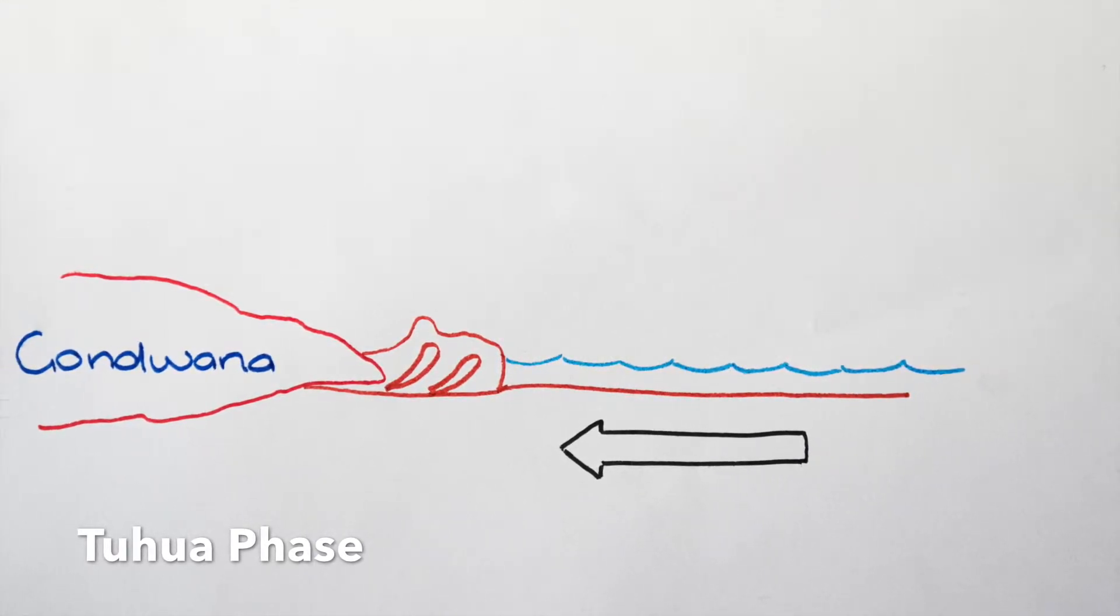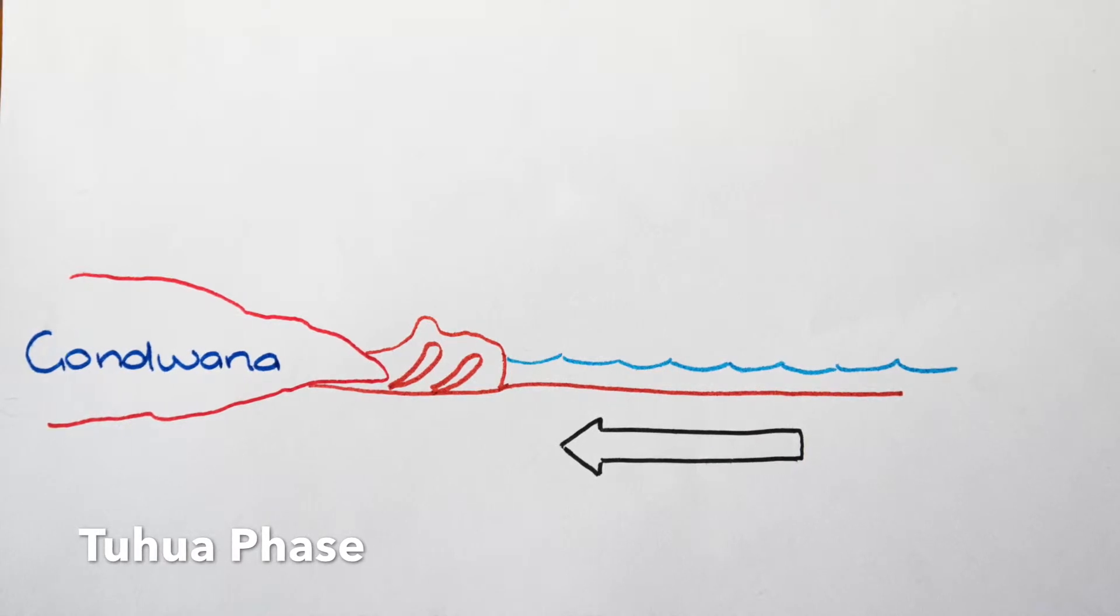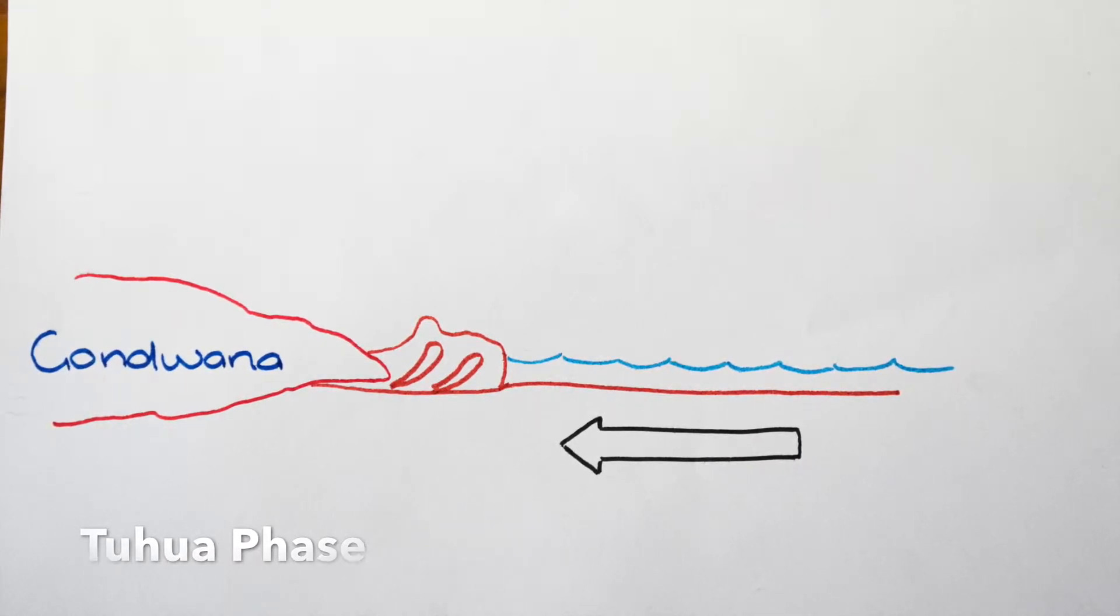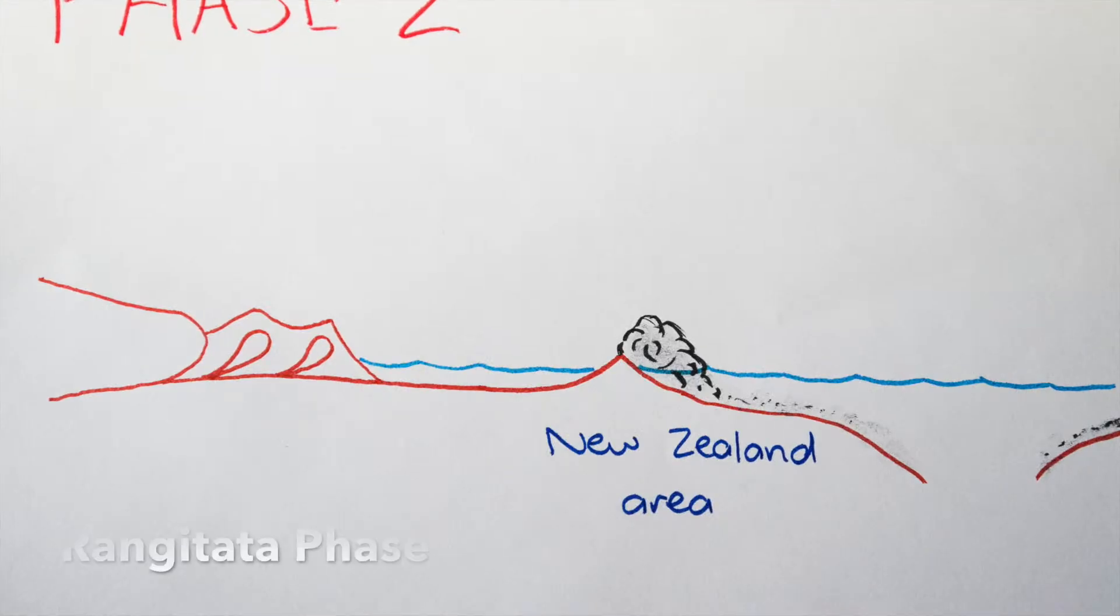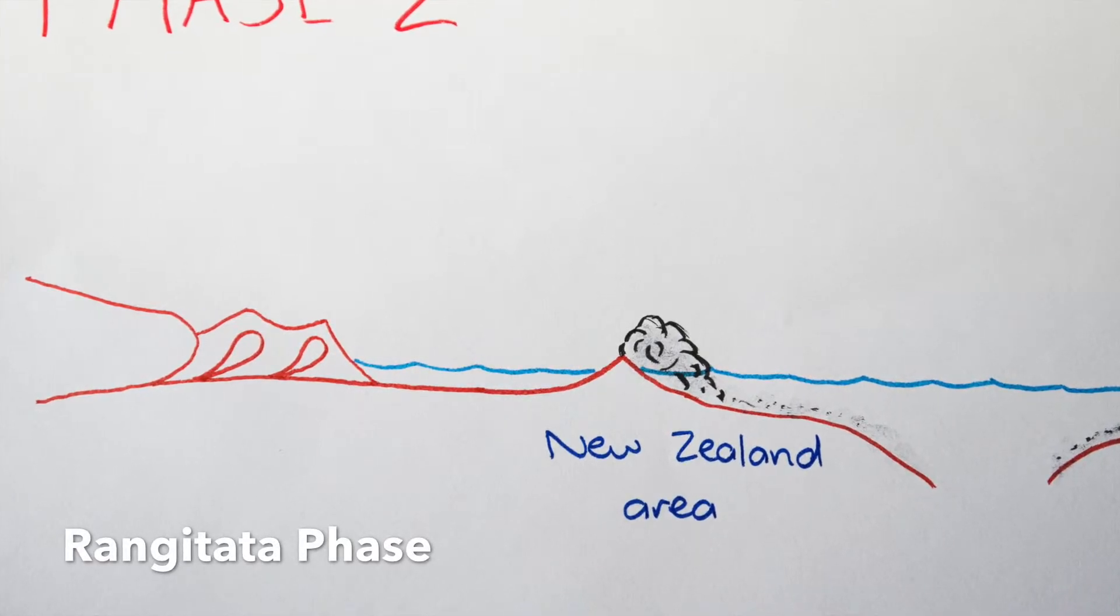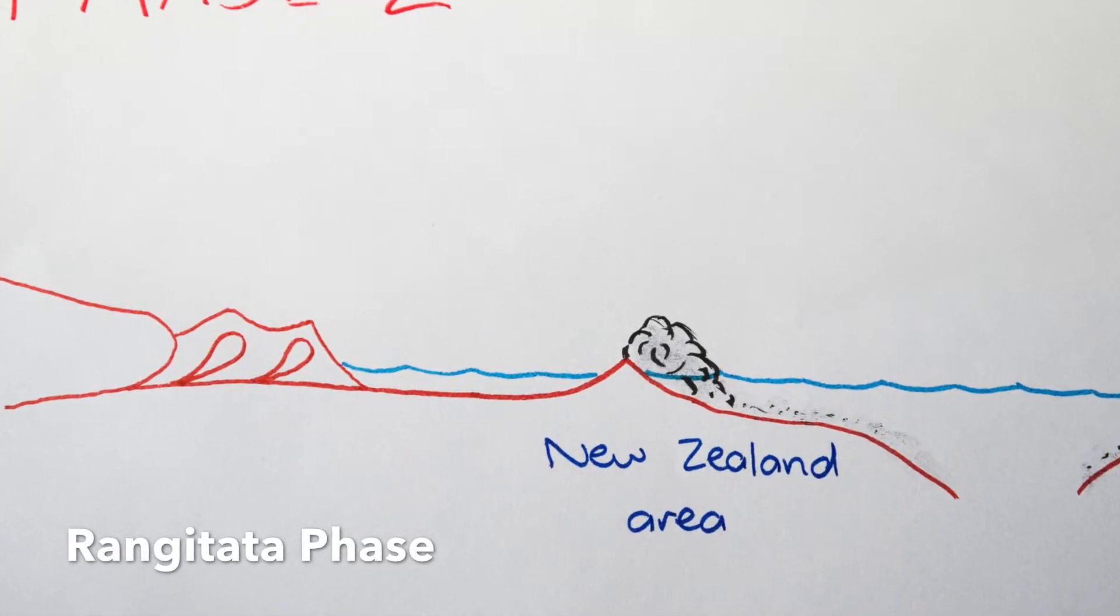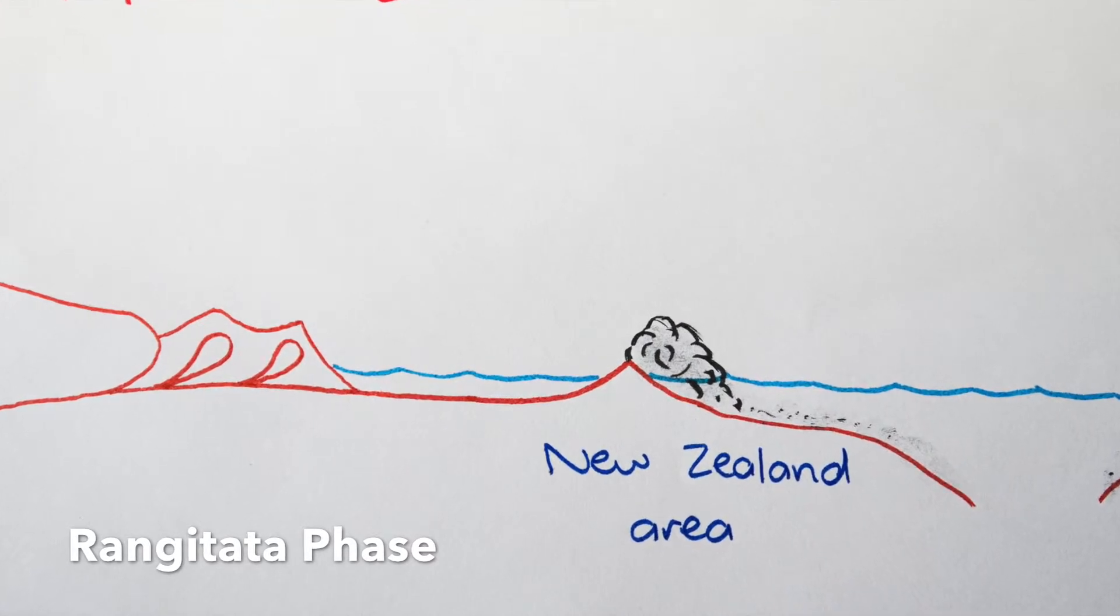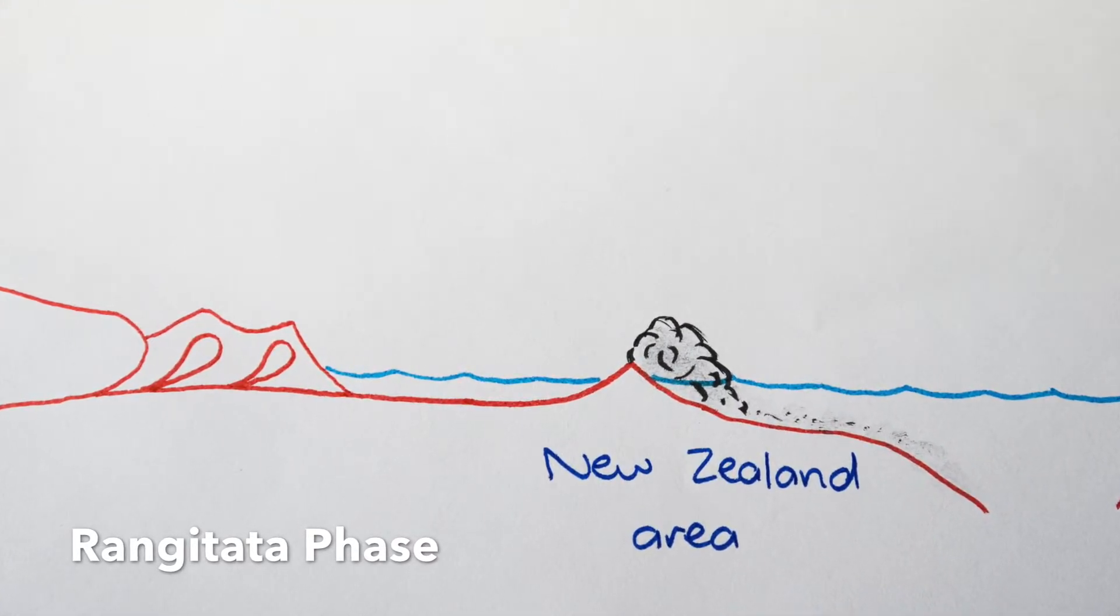The Rangitata sedimentation was then a second cycle of deposition where volcanic debris was deposited and New Zealand was once again submerged under the sea level.